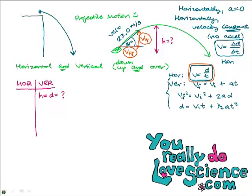When you use the vertical equations, every single thing you plug in — the final velocity, the initial velocity, the acceleration, the time, and the distance — every one of those values has to be vertical information.